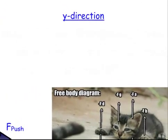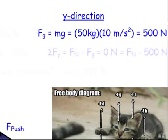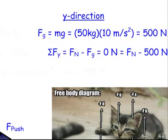Starting with the y direction: the force of gravity equals mass times gravity, which is 50 kg times 10 m/s² = 500 newtons. I'm using 10 instead of 9.8 to keep the numbers easy. The sum of forces in y equals normal force minus gravity, and since it's not accelerating vertically, that equals zero. So the normal force and gravity are equal and opposite, meaning the normal force equals 500 newtons.